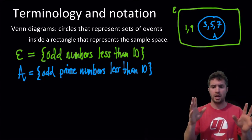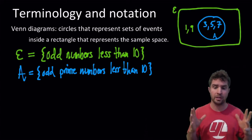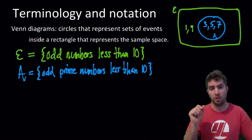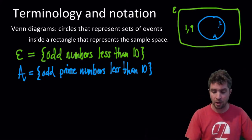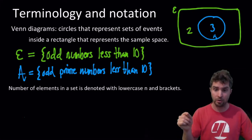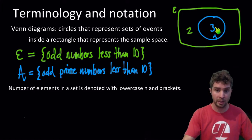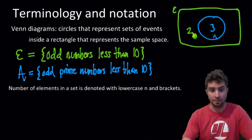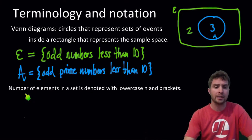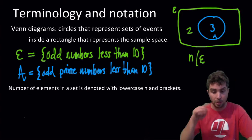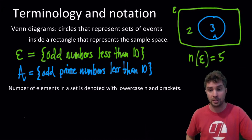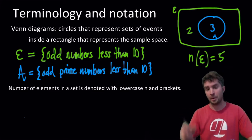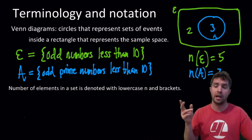1 just doesn't count as a prime and 9 is divisible by 3. Now I've listed the outcomes inside the Venn diagram — you can do that — but what you more commonly see is the number of outcomes. So instead of listing 1 and 9, we might have a 2, and instead of listing 3, 5, and 7, we might have the number 3, representing that there are 3 outcomes in event A and 2 outcomes that are part of the sample space but not in A.